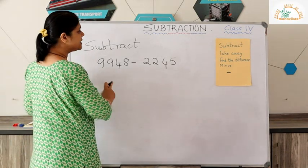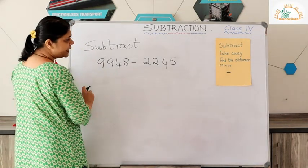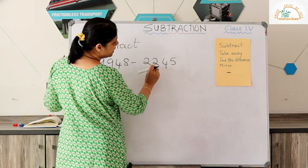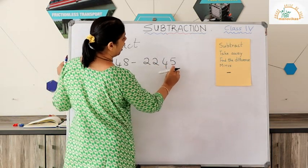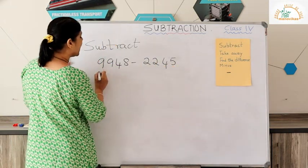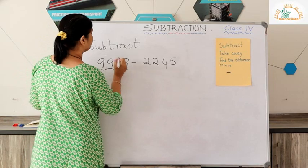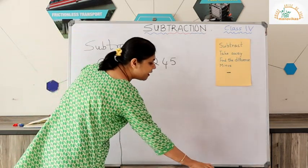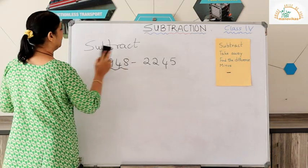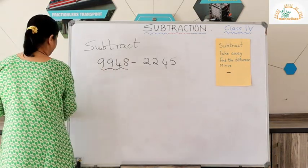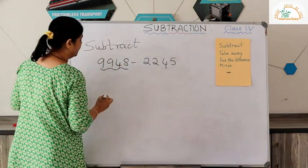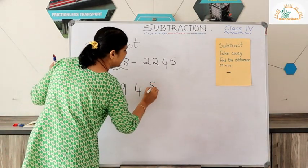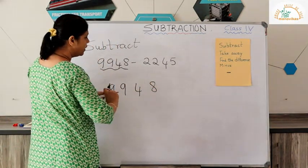Let us see the first example. We need to subtract 2245 from 9948. Which is the greater number? 9948. So we write the numbers one below the other — 9948 on top, which is the greater number.